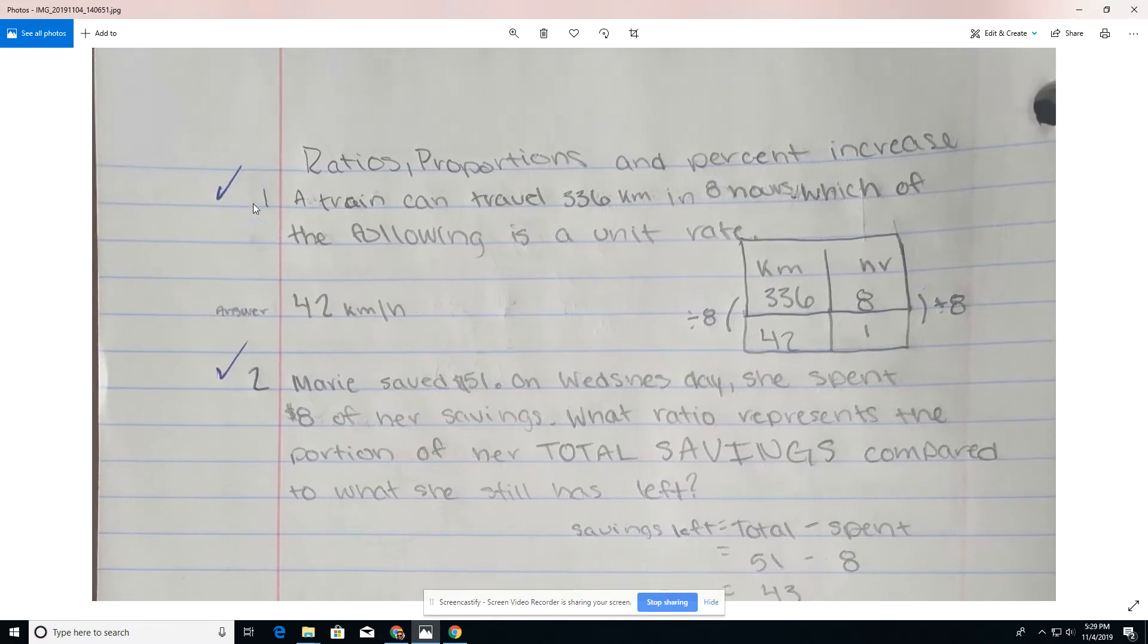Here's problem number one. A train can travel 336 kilometers in eight hours. Which of the following is a unit rate? Of course, a multiple choice question. They had multiple options. We knew the correct answer is 42. First thing to do would be to write the table, enter in the information given out of the problem. So that would be traveling 336 kilometers. We have a table labeled with kilometers and hours, 336 under kilometers, eight under number of hours.